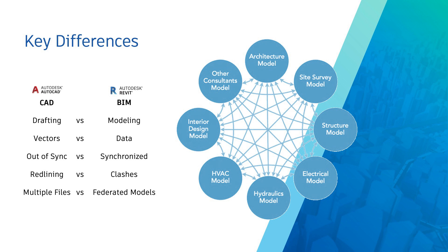Using a BIM approach with Revit, we create a federated building information model — an aggregated assembly of distinct models for each discipline, comprising a single, complete model of the building. A single federated model is useful for design coordination, clash avoidance, clash detection, approval processes, design development, estimating, and so on. The individual models are maintained as separate files with clearly defined scope, but they are able to be brought together as needed. These are the fundamental differences between AutoCAD and Revit.